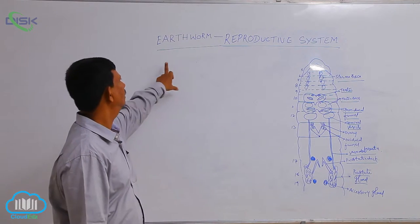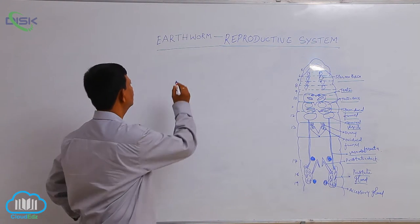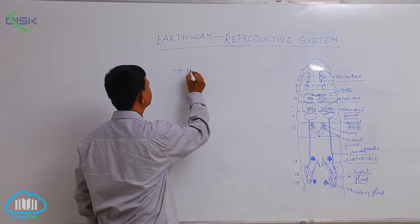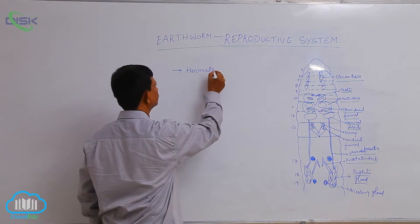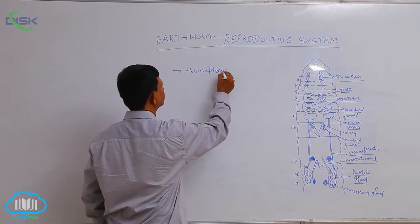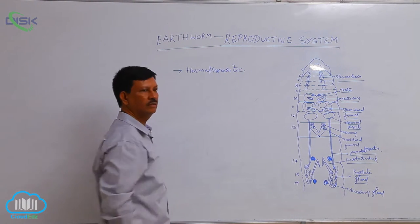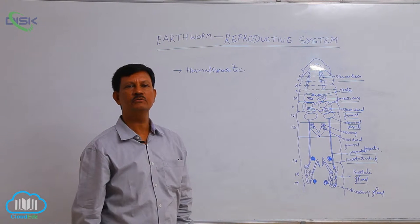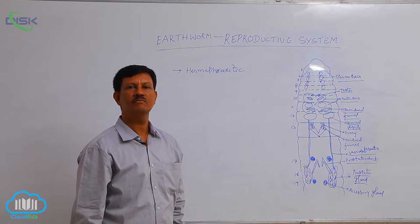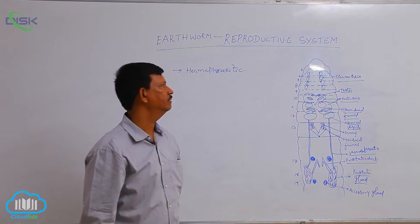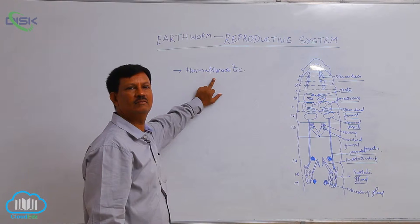Reproductive system of earthworm. Earthworm is hermaphroditic or bisexual animal. Both male reproductive system and female reproductive system are found in the same individual, hence it is known as a hermaphroditic animal.